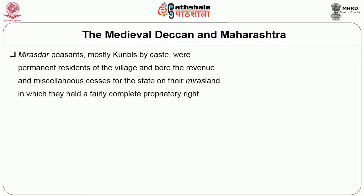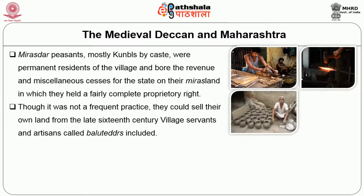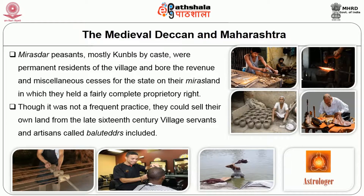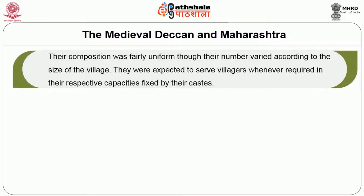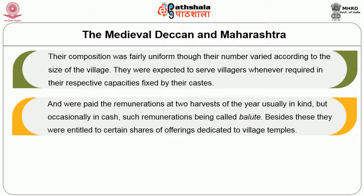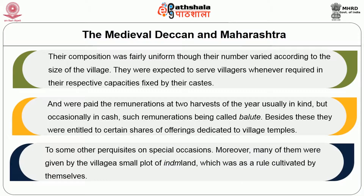Mirasdars, mostly Kunbis by caste, were permanent residents of the village who bore the regular revenue and miscellaneous cesses for the state on Miras land, in which they held fairly complete proprietary rights. Village servants and artisans — called Balitadas — included the carpenter, blacksmith, potter, shoemaker, ropemaker, barber, washerman, astrologer, temple keeper, mosque keeper, and so on. They were expected to serve the village whenever required in their caste-fixed capacities, and were paid remuneration at two harvests of the year — usually in kind but occasionally in cash — called Baluthe. Many of them were also given small Inam land in the village, as a rule cultivated by themselves.